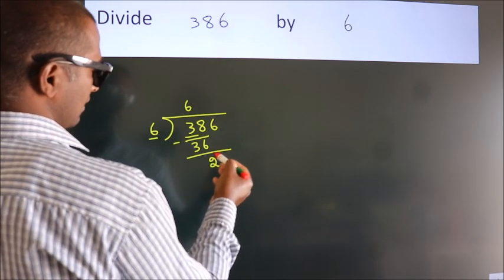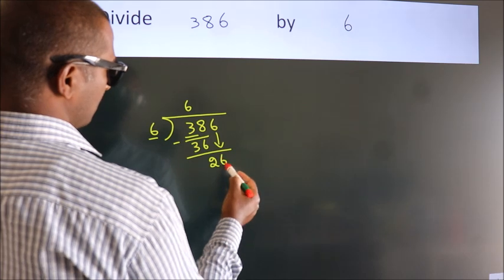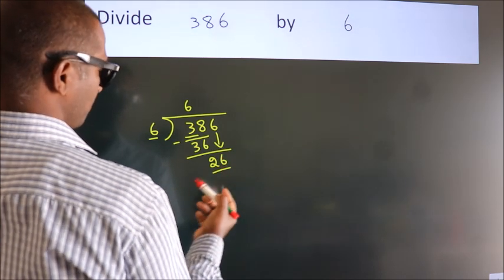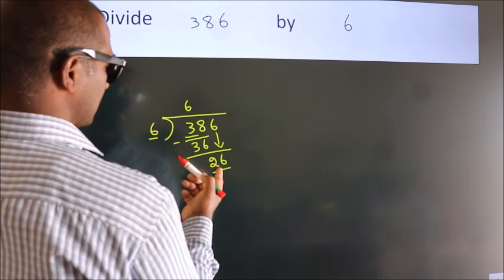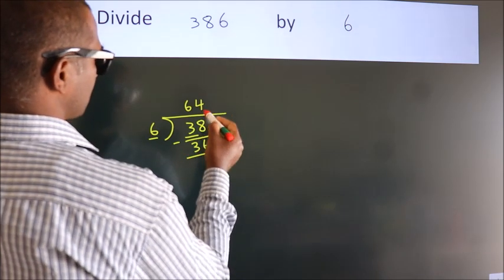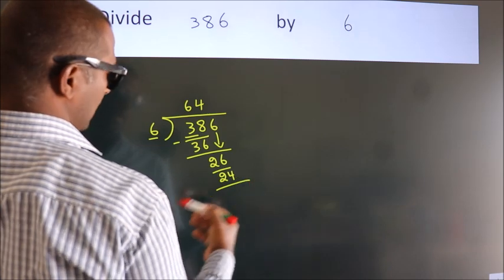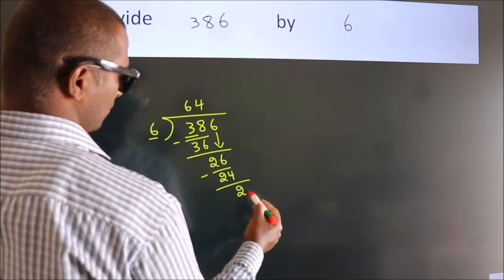After this, bring down the beside number. So 6 down, making 26. A number close to 26 in the 6 table is 6 fours, 24. Now we subtract. We get 2.